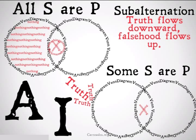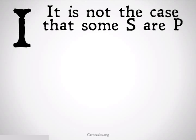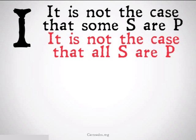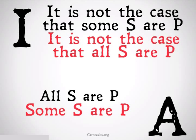However, if it is not the case that some S is P — if we deny our I statement — that falsehood of the I statement will flow up to the A. If it's not the case that the I statement, it's not going to be the case of the A statement, because if that X in the middle doesn't exist, it won't exist for either the I or the A statement. So the A statement will be false. We can make arguments like: it is not the case that some S is P, therefore it is not the case that all S is P — that's falsehood flowing up. And: all S is P, therefore some S is P — that's truth flowing down.